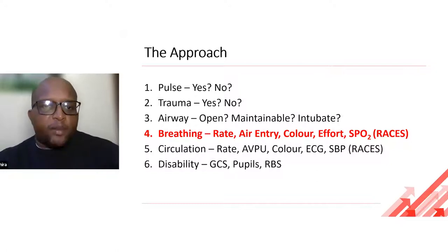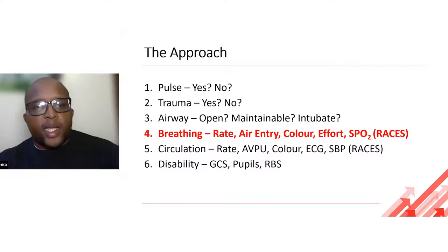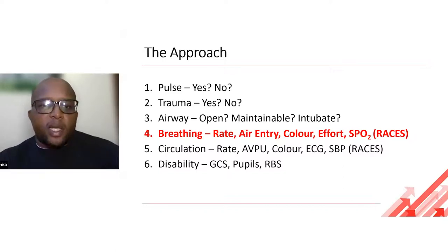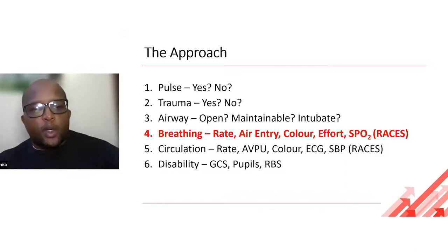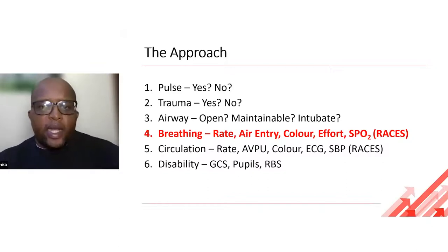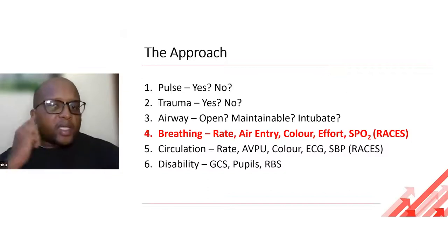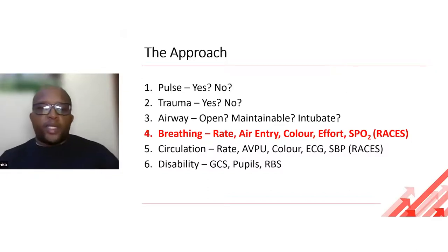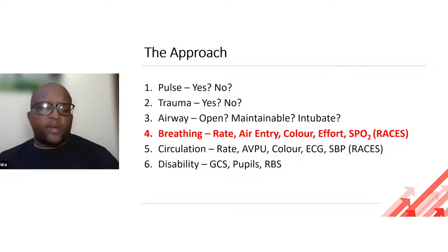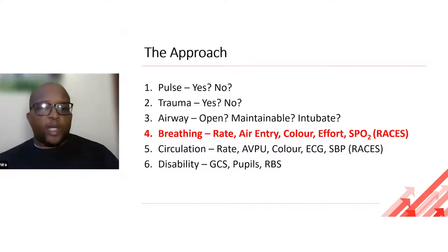Today we'll be focusing on the breathing perspective: rate, air entry, colour, effort, and saturations — RACE is a good mnemonic. For circulation, you use the same RACES mnemonic: rate, level of consciousness using AVPU, colour, ECG, systolic blood pressure, and checking disability — GCS and RBS. On the 21st we'll be covering the patient presenting with shock, which focuses on circulation.